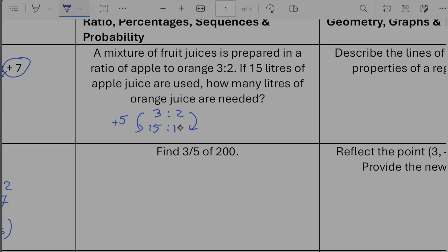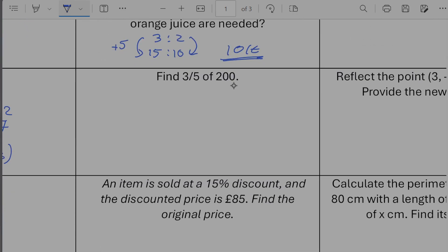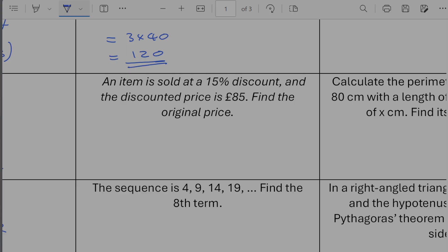So we're just going to say 5 times by 5 is going to give us 25. So 25 liters. Right find three fifths of 200 so that's the same as saying three fifths times by 200 so one fifth of 200 so 200 divided by five is going to give us 40 so we're doing three times by 40 which is going to give us 120.